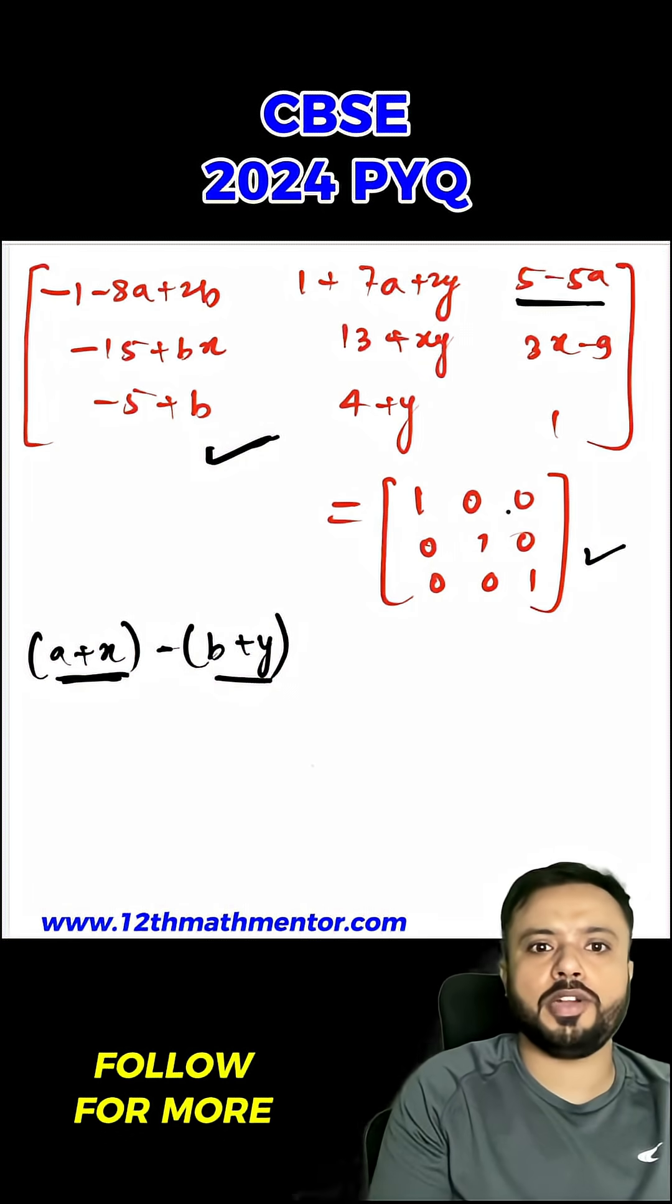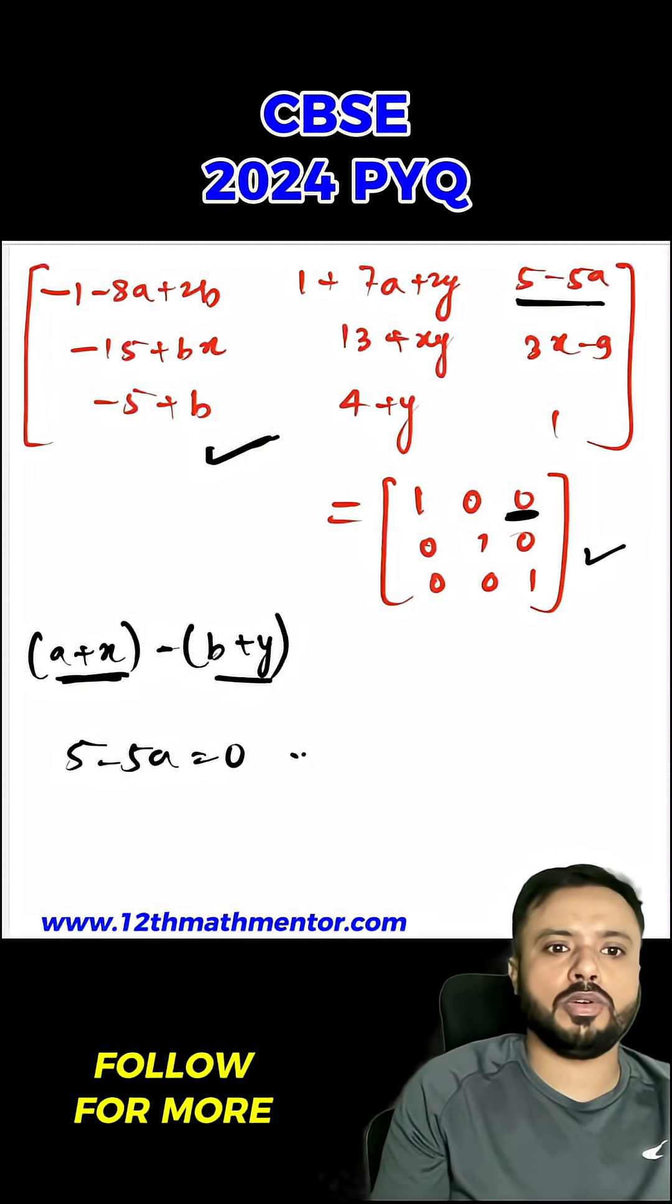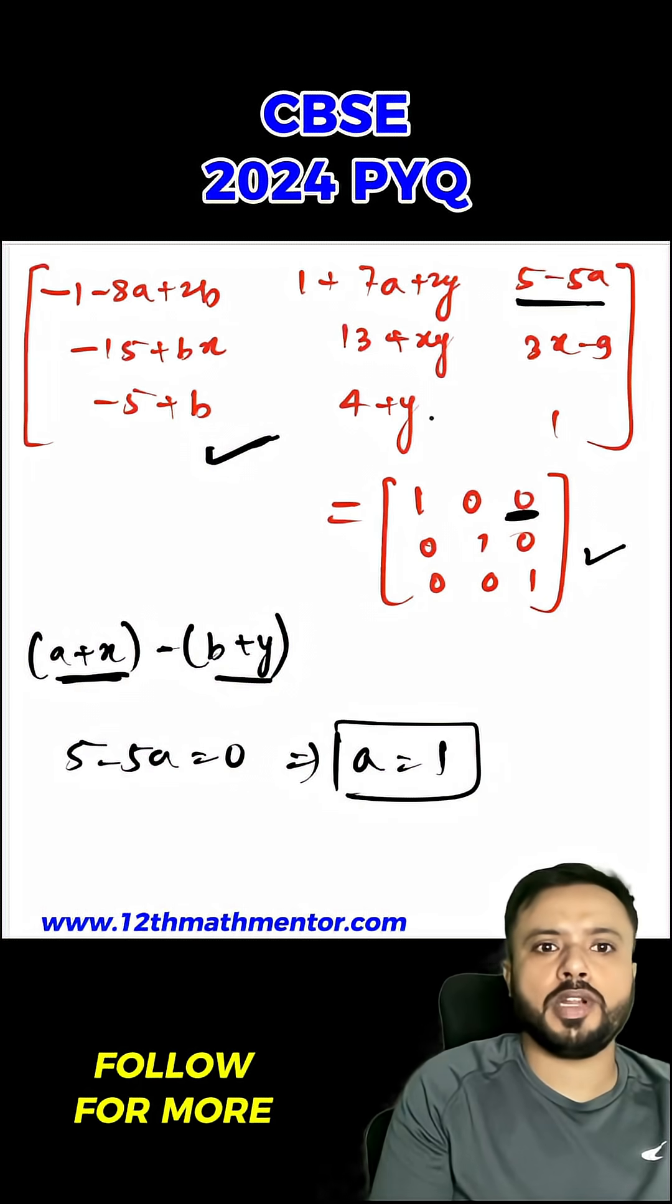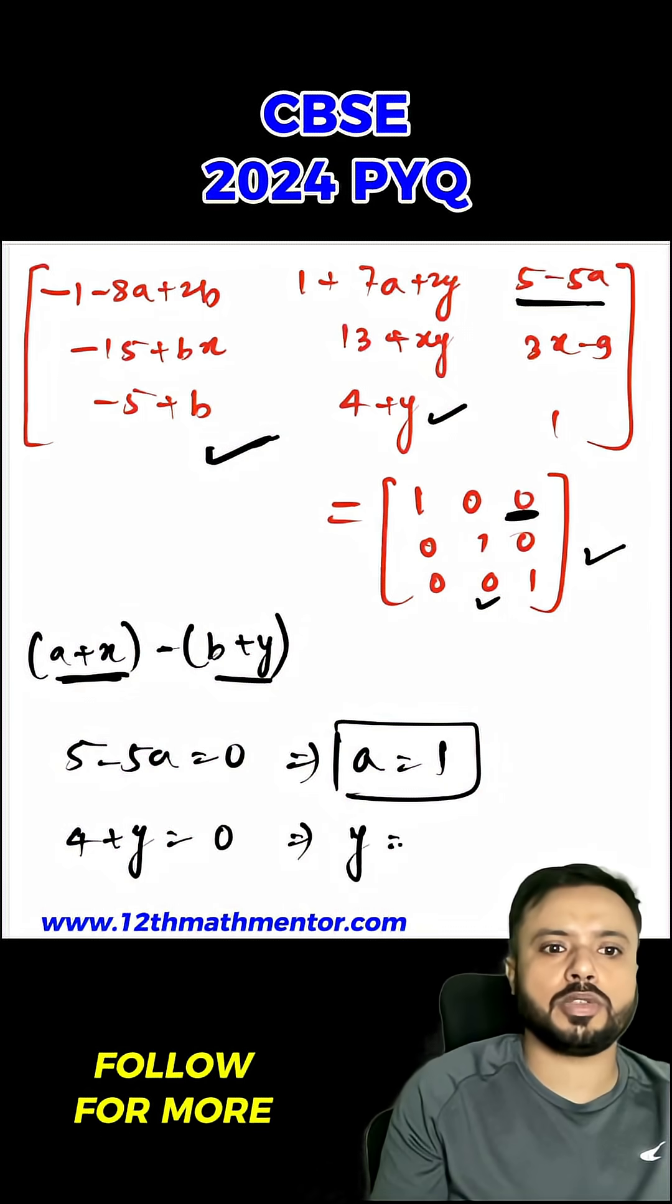First I am going to equate 5-5a to 0. So 5-5a equals 0, hence I am getting a equals 1. Now I am going to equate 4+y to 0. So 4+y equals 0, that means y equals -4.